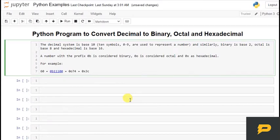Hello, in this tutorial we will write a Python program to convert decimal numbers to binary, octal and hexadecimal.